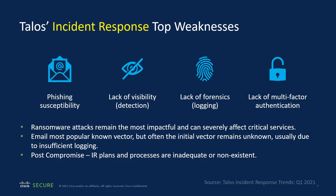TALOS incident response determined these top weaknesses: phishing — humans are a core piece of the defensive posture and we need to ensure we're educating them. Lack of visibility and detection. Lack of forensics — for example, if you're at a coffee shop, connect to a malicious domain, get compromised, then move into the network laterally, your forensic data collection is missing a piece of the puzzle. We need comprehensive logging. And a lack of multi-factor authentication — if adversaries get credentials, we don't want them to log in without another level of authentication.